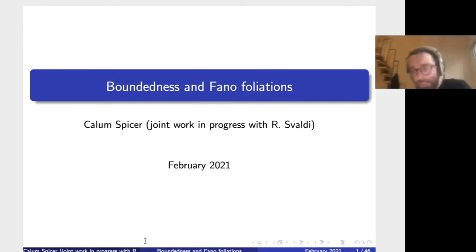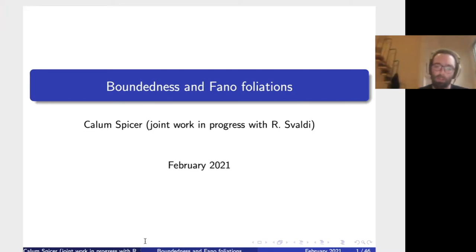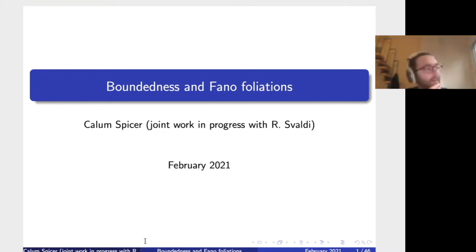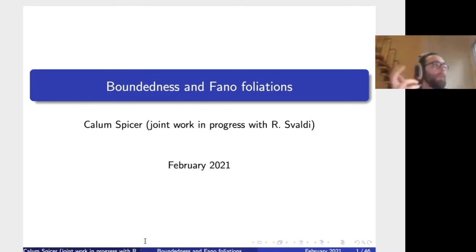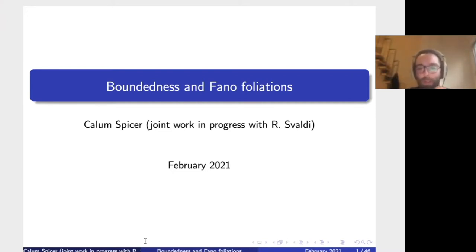Thanks so much for the invitation to come talk. I'm going to be talking about some joint work in progress with Roberto Svaldi. I'm going to talk about some features about Fano foliations. I want to start off by defining foliations and then running through some basic examples, which maybe convince you these are pretty natural objects in terms of geometry, but they also have some odd features which we don't see in the case of varieties. Then I'll go on to talk about some boundedness results I've been working on with Roberto Svaldi.